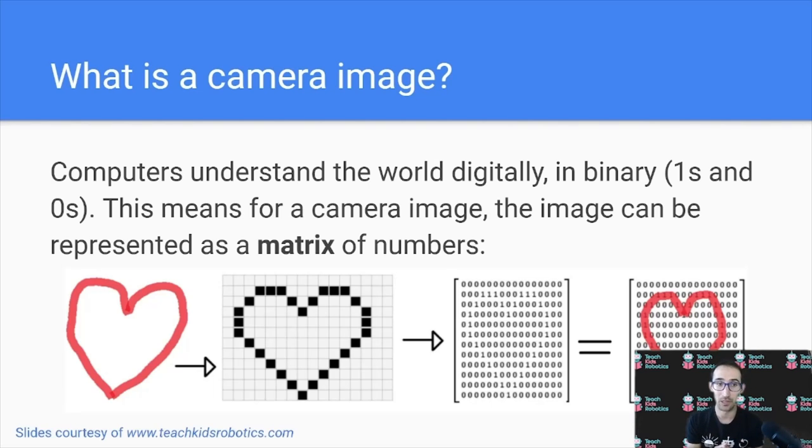In this example below, we have a heart, which can be represented as a heart on a grid, and then that grid can be transformed into a grid of numbers, known as a matrix, where that set of numbers reflects what is actually going on in the original image.